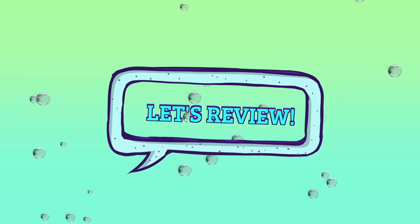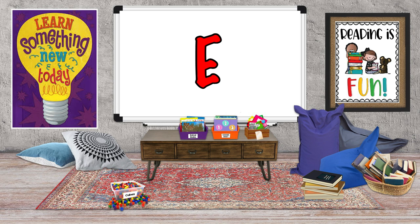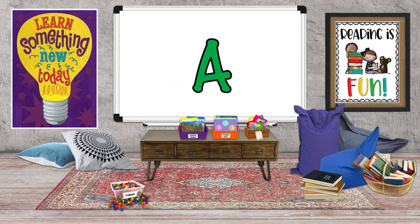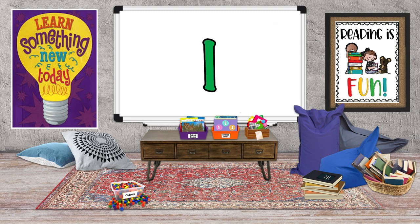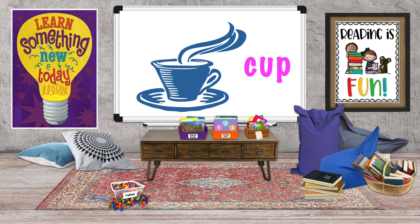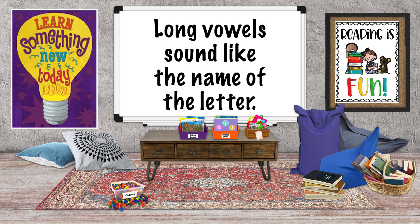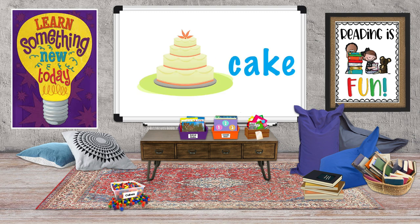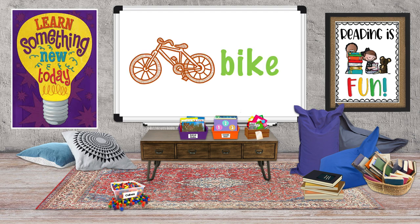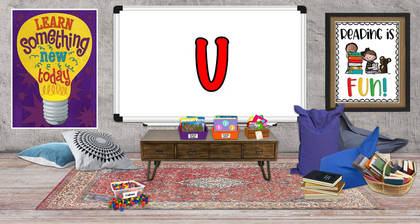You're becoming vowel masters! Let's review what we've learned today. There are five vowels: A, E, I, O, and U. Vowel sounds can be long or short. Examples of short vowel sounds: short A — 'cat,' short E — 'bed,' short I — 'pig,' short O — 'box,' short U — 'cup.' Now the long vowels — for the most part, long vowels sound like the name of the letter: long A — 'cake,' long E — 'bee,' long I — 'bike,' long O — 'boat,' long U — 'cube.'